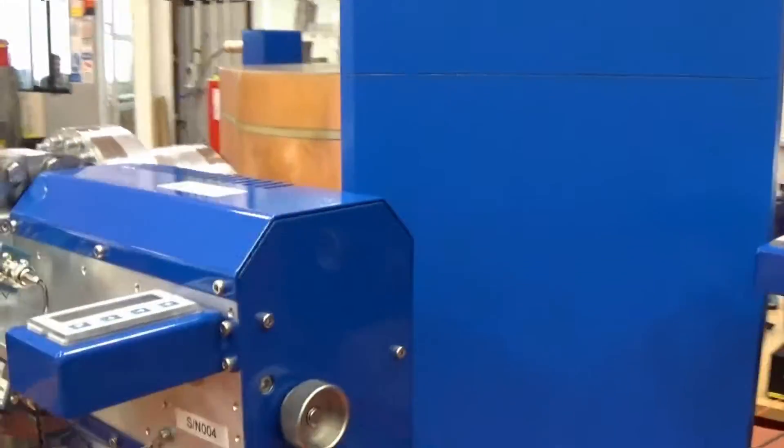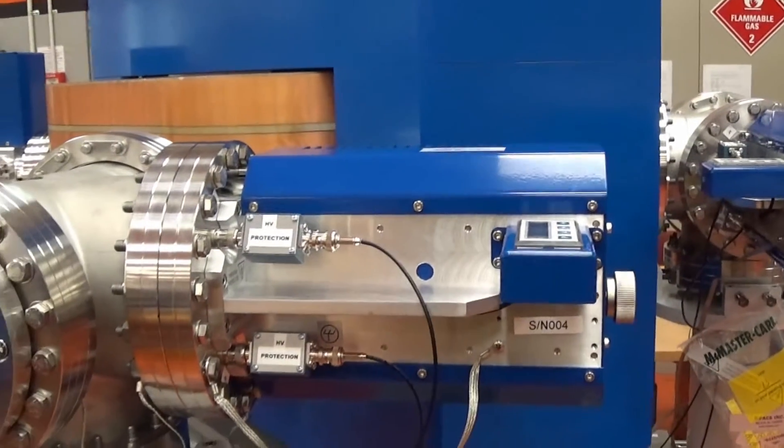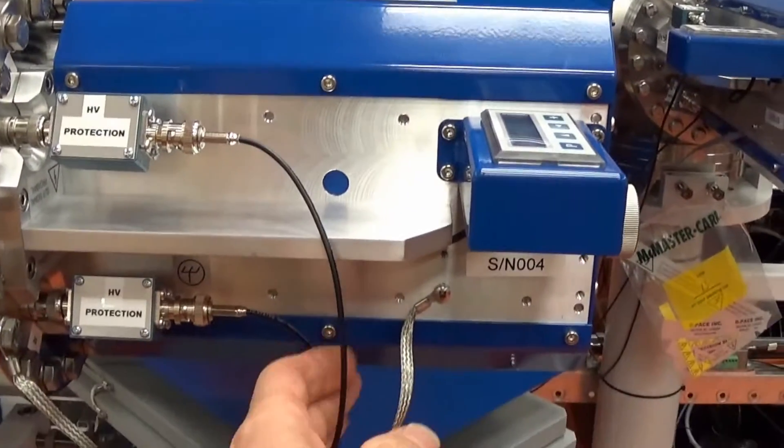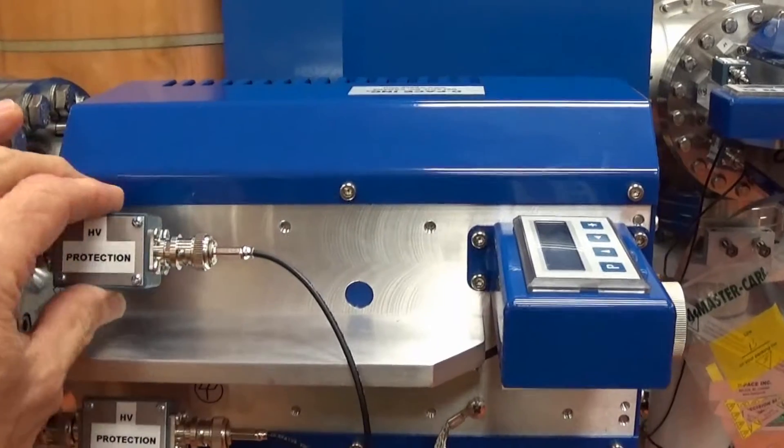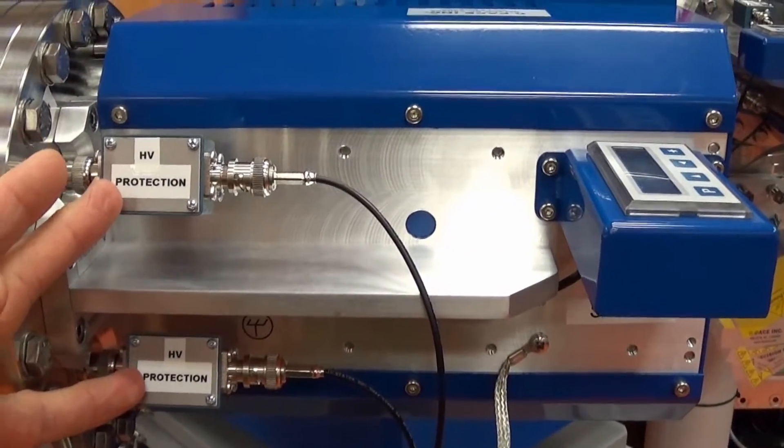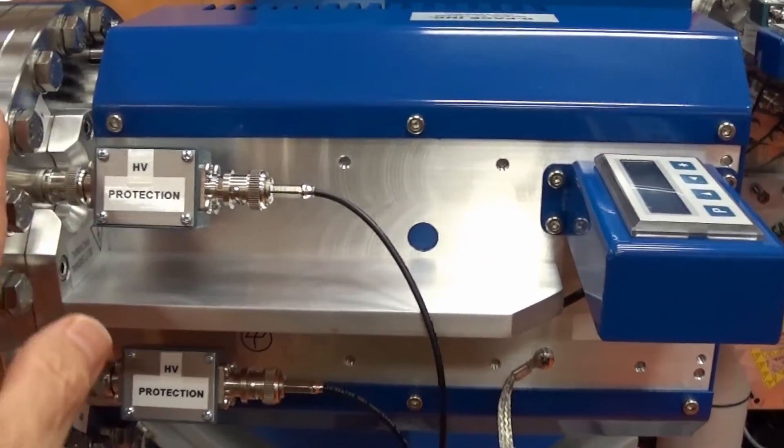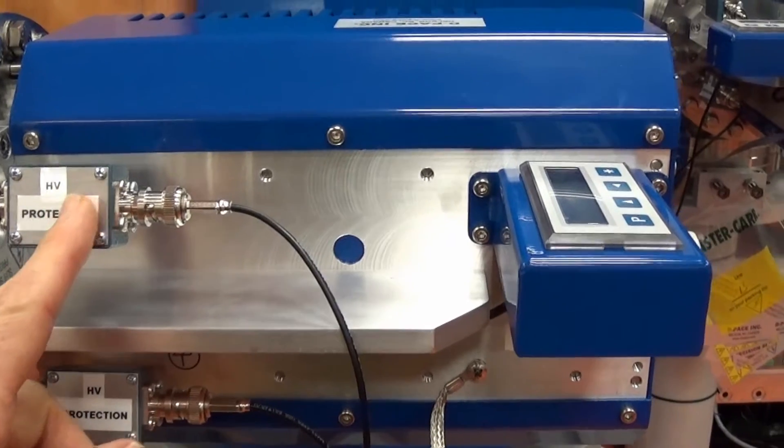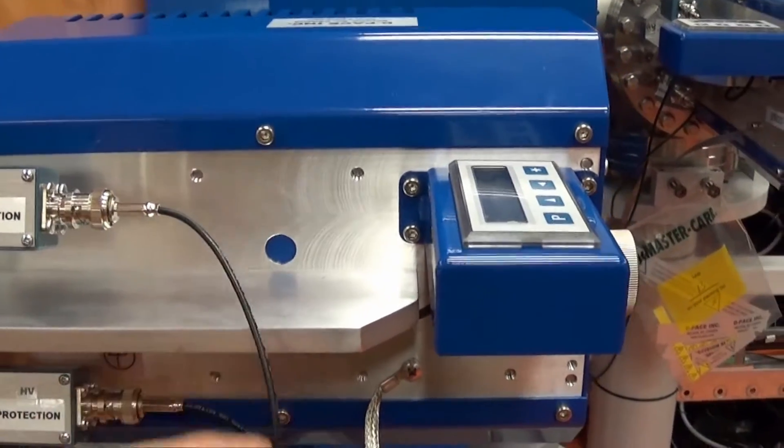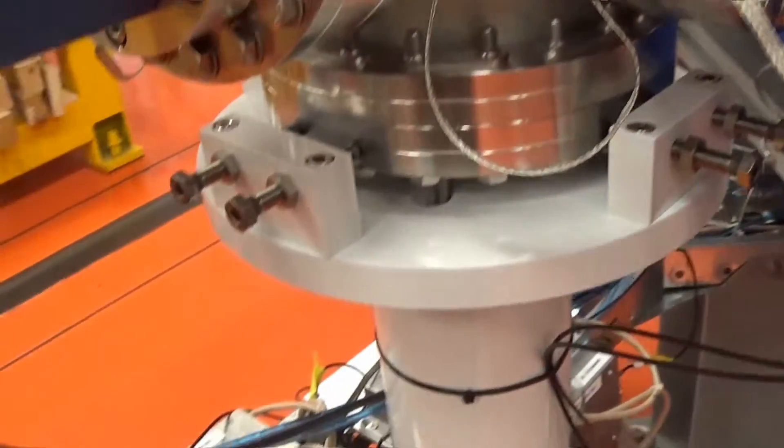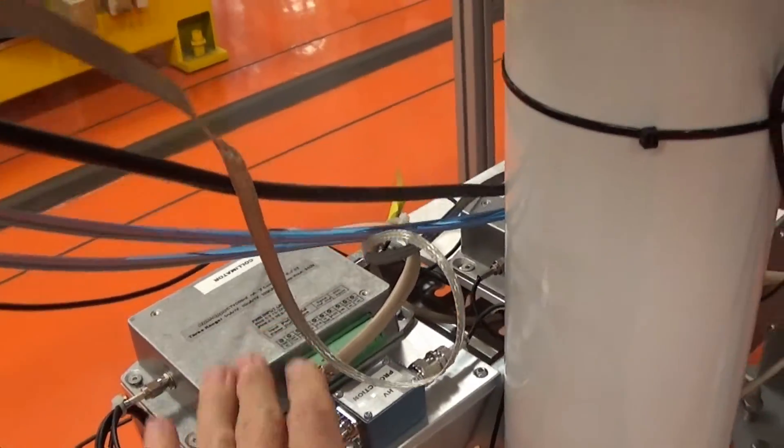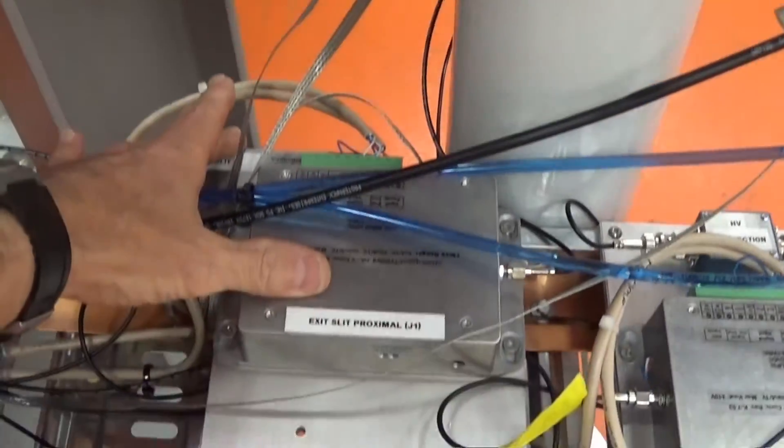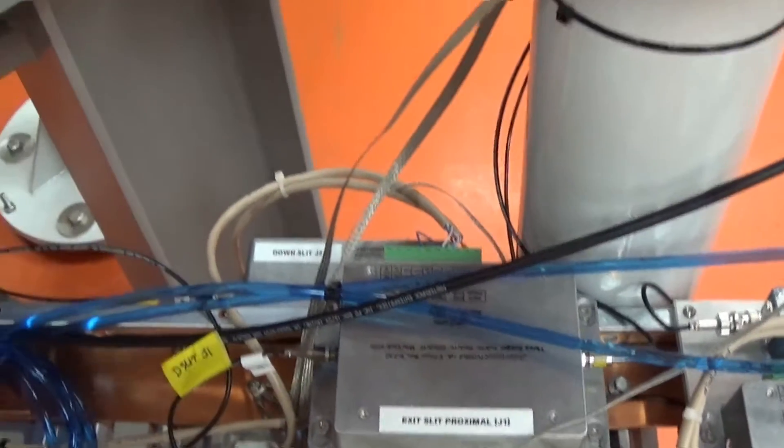We have a second set of slits here and these cables here bring the signal back from the slits. Inside these little boxes is some protection circuitry so that when the particles hit the slits they can charge up the slits to thousands of volts. You don't want that to happen so this will bleed off that voltage and just allow the current to flow down into a set of amplifiers that we have down here, and then they send the signal back to the PLCs.